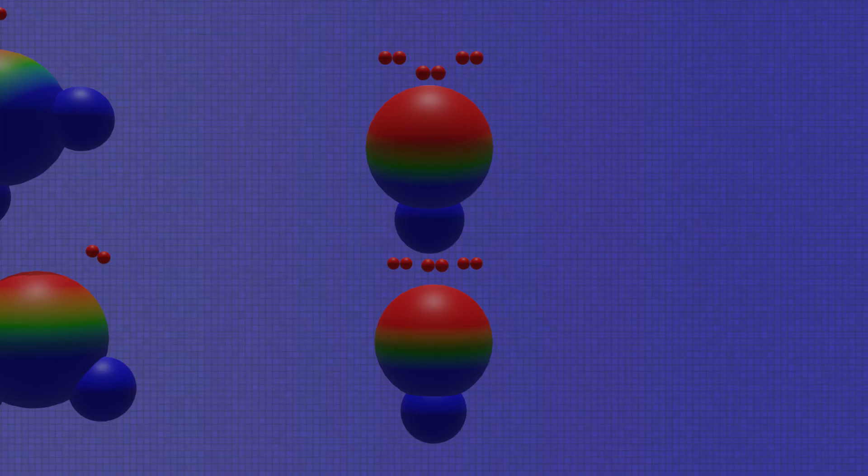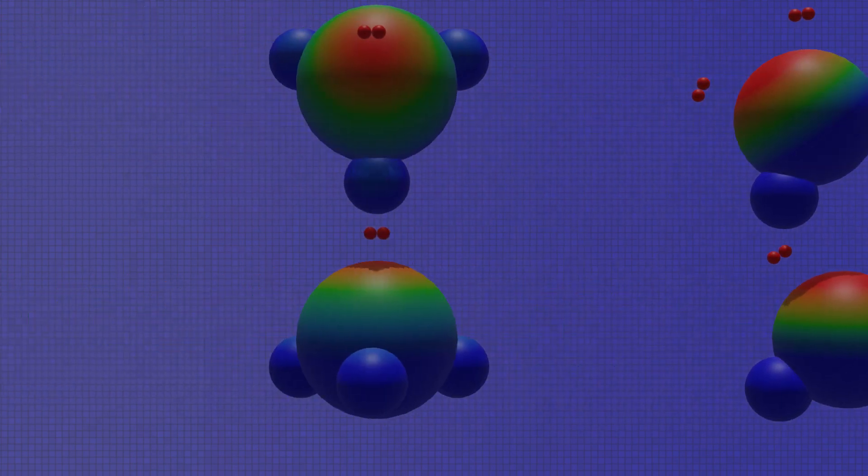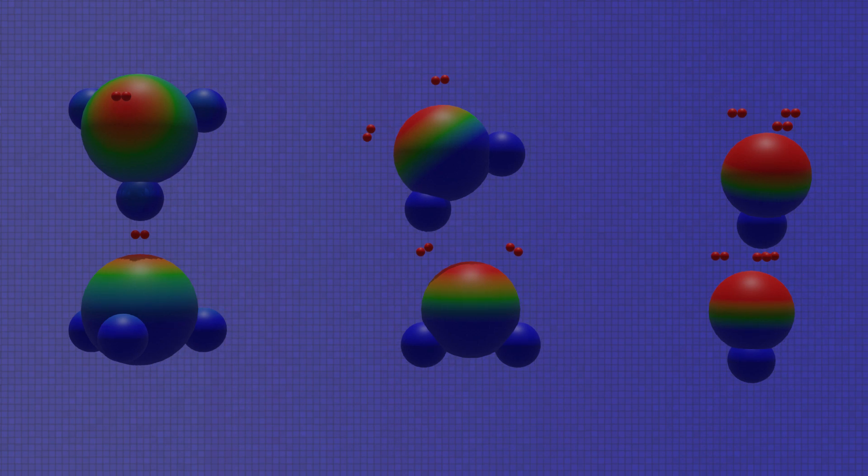So, hydrogen fluoride, with its strongest polarity, has the strongest hydrogen bonds, and ammonia, with its lesser electronegativity, has the weakest of the hydrogen bonds between the three.